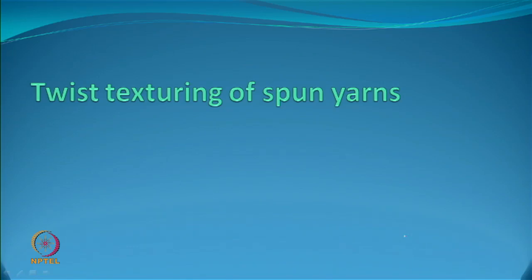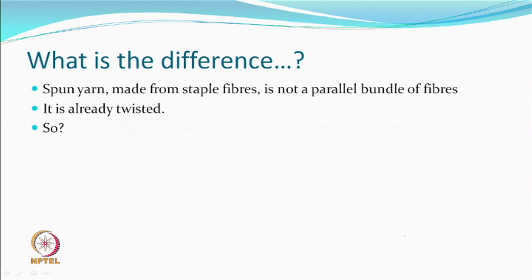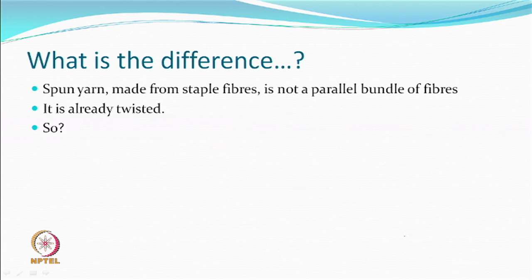Now we look at the texturing of spun yarns — yarns which are already spun using staple fibres — where we want to get the same or similar effect, meaning stretch and bulk. For twist texturing of spun yarns, the key difference is that spun yarns are made from staple fibres. Previously we were working on filament yarns as far as twist texturing is concerned, and spun yarns are definitely not parallel bundles of fibre; they are already twisted material.